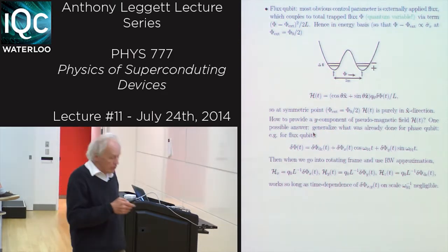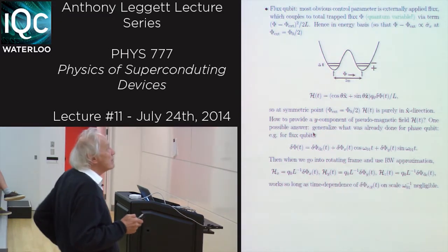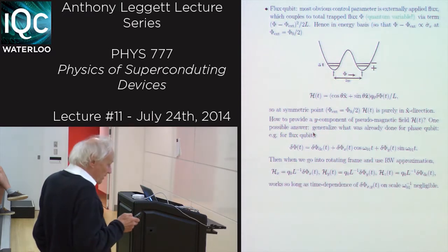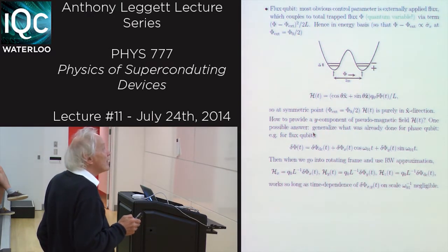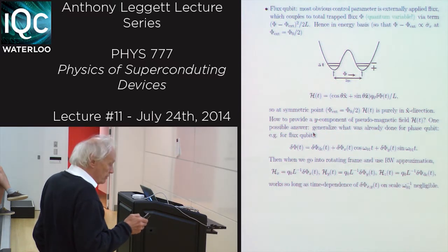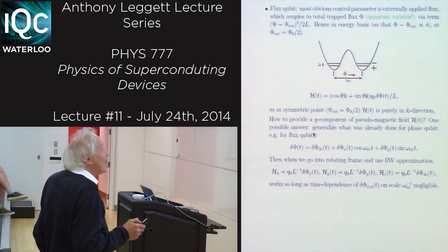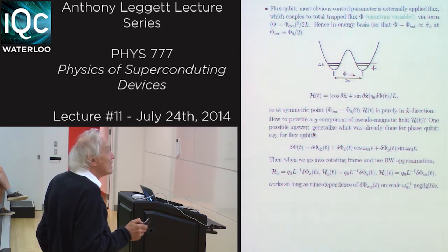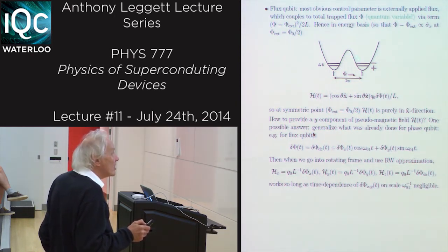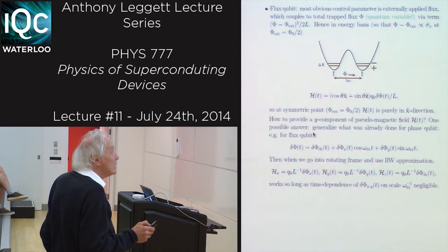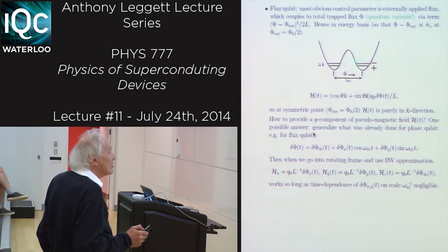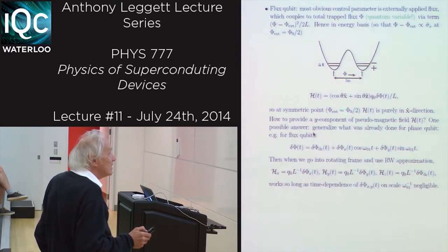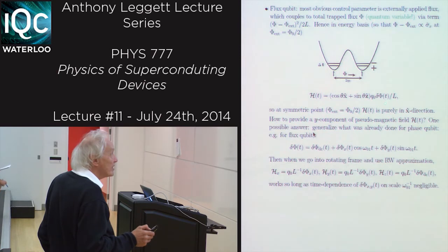For a flux qubit, the most obvious natural control parameter is the externally applied flux, which couples to the total trapped flux phi. In the energy basis, the basis is the even and odd parity states, so the two wells correspond to the eigenstates of sigma x, not sigma z. In this case, you get a formula of this type, and at the symmetric point the effective magnetic field is purely in the x-direction.